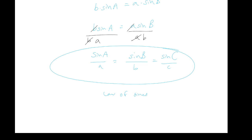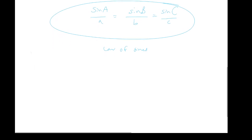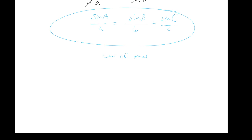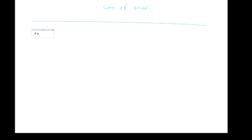The law of sines works for any triangle: the sine of an angle over its opposite side is going to be equal in every single case. Let's use this now. Here's our first example: the measure of angle A is 17°, the measure of angle B is 29°, and lowercase a is equal to 8. How long is b?